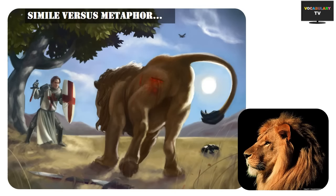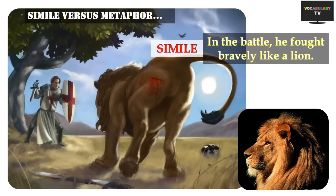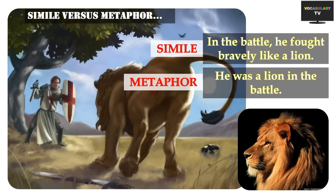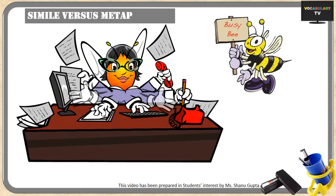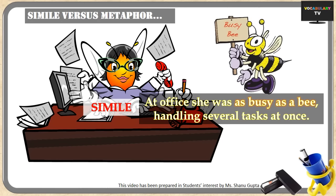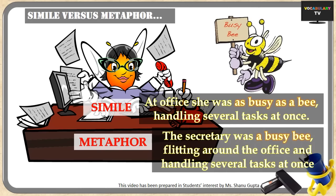Since similes and metaphors both involve comparison of unlike things, a useful tip to tell them apart: a simile uses the words 'like' or 'as,' while a metaphor does not. Sometimes the same message can be conveyed using either. 'In the battle he fought bravely like a lion' is a simile, while 'he was a lion in the battle' is a metaphor. Similarly, 'at office she was as busy as a bee' is a simile, but 'the secretary was a busy bee, flitting around the office,' is a metaphor.